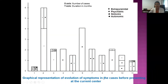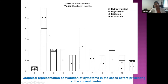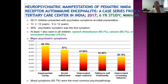A graphical representation from AIIMS shows how symptoms evolved over time before patients presented: for example, extrapyramidal symptoms persisted for 1.5 to 4 months before seizures or psychiatric manifestations appeared. A six-year study from NIMHANS found that about 48% of NMDA receptor encephalitis cases had psychiatric features as the first symptom — including inappropriate crying (66%), social withdrawal, unprovoked anger, talking to self, and unprovoked screaming — emphasizing the importance of recognizing these presentations.